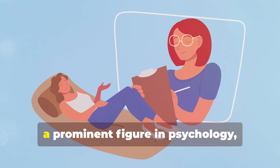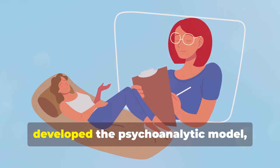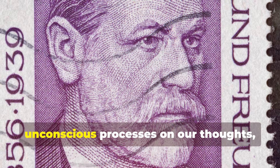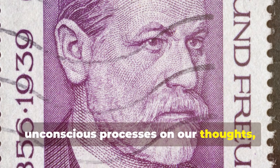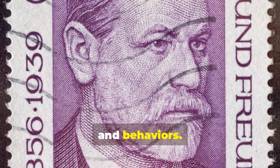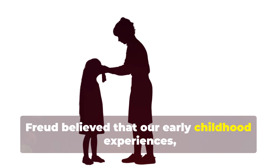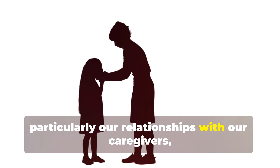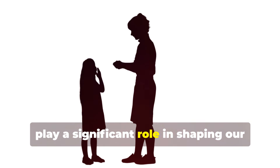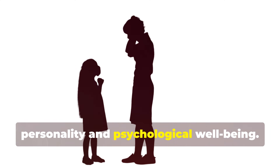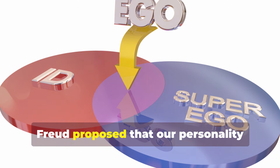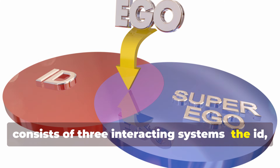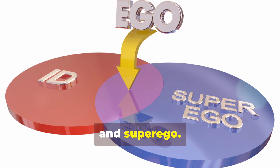Sigmund Freud, a prominent figure in psychology, developed the psychoanalytic model which emphasises the influence of unconscious processes on thoughts, feelings and behaviours. Freud believed that our early childhood experiences, particularly our relationships with caregivers, play a significant role in shaping our personality and psychological wellbeing. Freud proposed that our personality consists of three interacting systems: the ID, ego and superego.